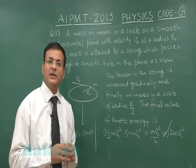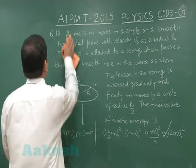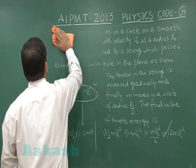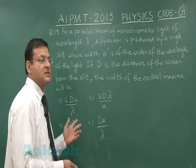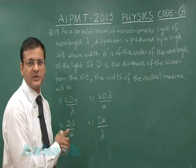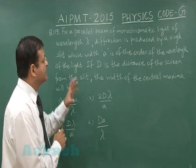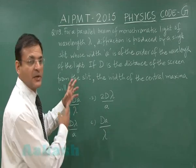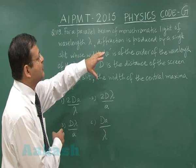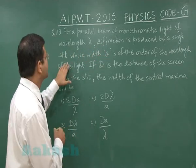Now let us switch over to question 119. This is a question from wave optics, diffraction. This is a standard formula. It says that for a parallel beam of monochromatic light of wavelength λ, diffraction is produced by a single slit whose width is a.